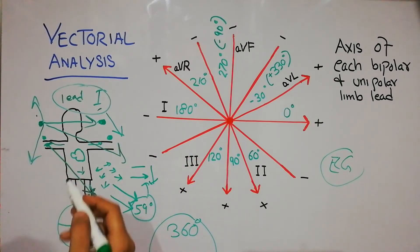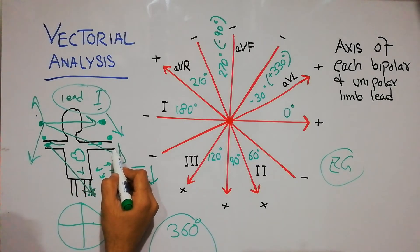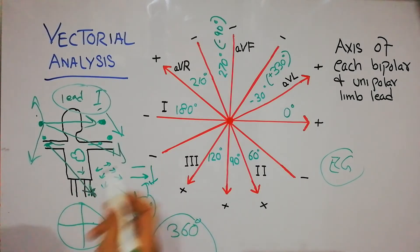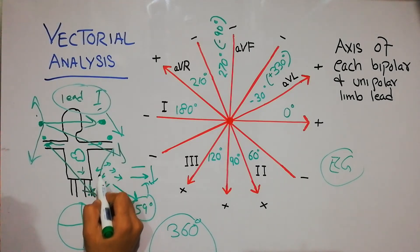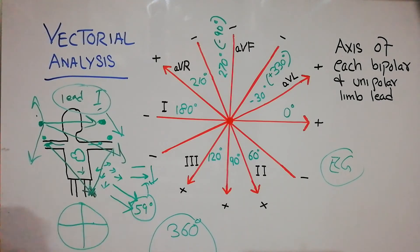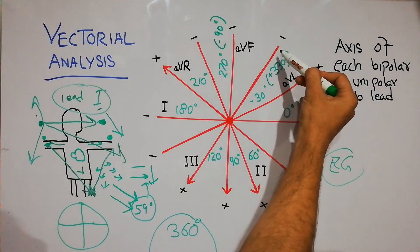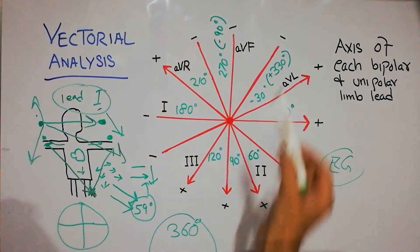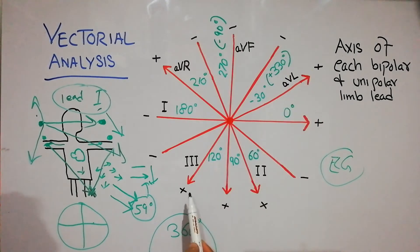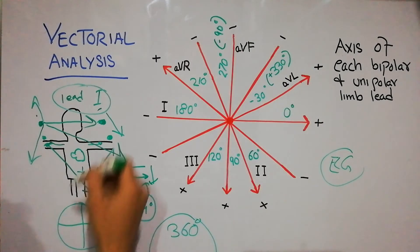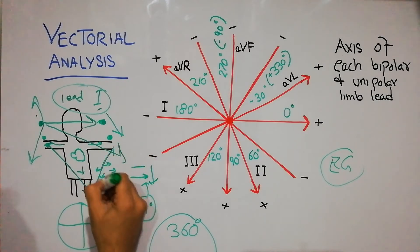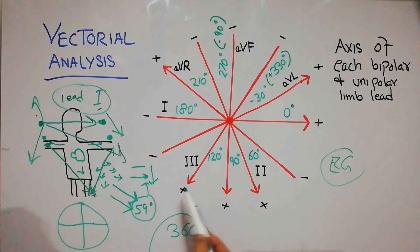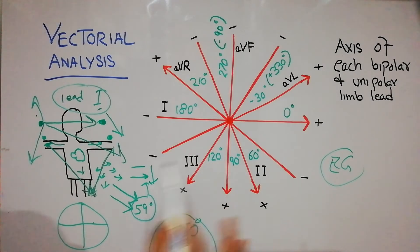Lead III is obtained by connecting the left arm with the left foot. Imagining the human body, with the left arm above and the left foot below, Lead III runs in that direction — starting from the negative and coming toward the positive — and its value is 120 degrees.